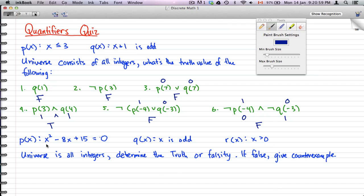So far so good. Now for the second question of our quiz, p(x) represents x squared minus 8x plus 15 equals 0. q(x) represents x is odd, and r(x) represents x is greater than 0. The universe is all integers.